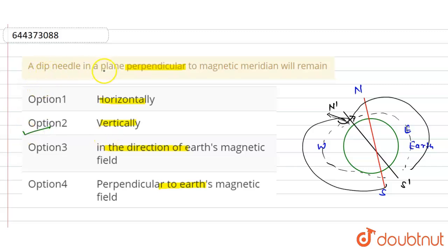Therefore a dip needle in a plane perpendicular to magnetic meridian will remain vertically. So this is the final answer. I hope you understood. Thank you.